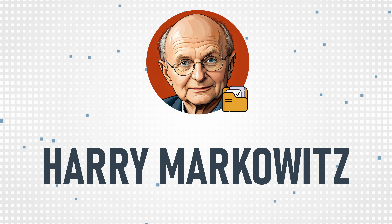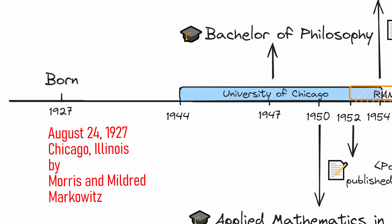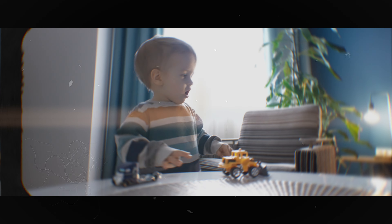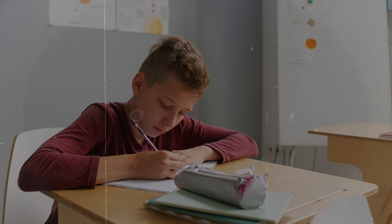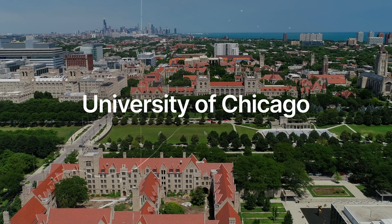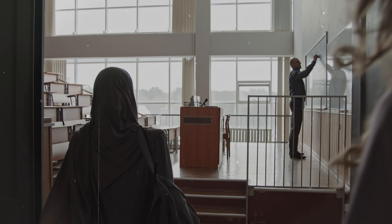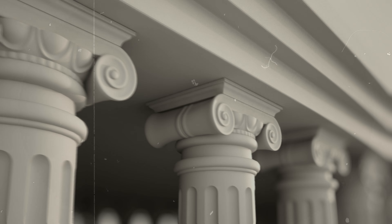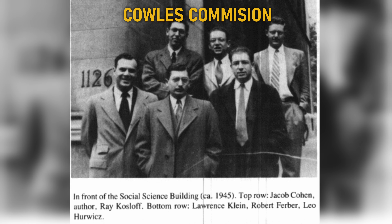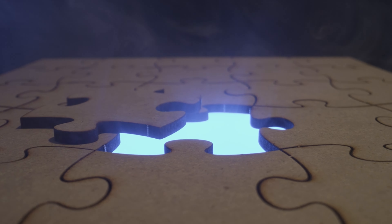Harry Markowitz was born on August 24th, 1927 in Chicago. His early fascination with physics and philosophy, particularly the works of David Hume, hinted at a mind that was always questioning, always searching. Harry's journey took a pivotal turn at the University of Chicago, where his pursuit of philosophy shifted towards the complex world of economics. Under the tutelage of giants like Milton Friedman, Harry found himself at the crossroads of economics and mathematics, and amidst the intellectual fervor of the Cowles Commission, a young Markowitz began to see the stock market not just as a chaotic arena, but as a puzzle waiting to be solved through mathematics.